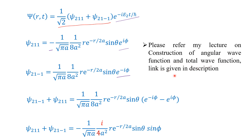Adding ψ₂₁₋₁ and ψ₂₁₁: taking the positive sign first, the negative sign from ψ₂₁₁ carries through. When you add the exponential terms, e^(−iφ) minus e^(iφ) — wait, e^(iφ) minus e^(−iφ) — this equals 2i·sin(φ). All other terms remain the same.